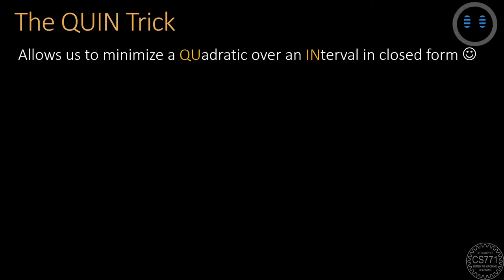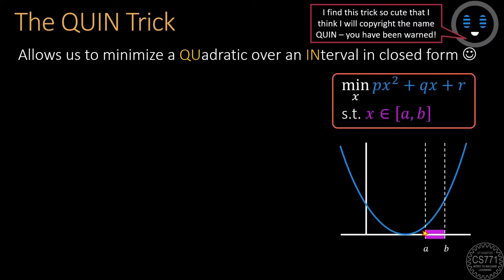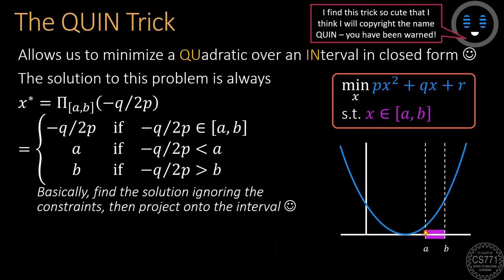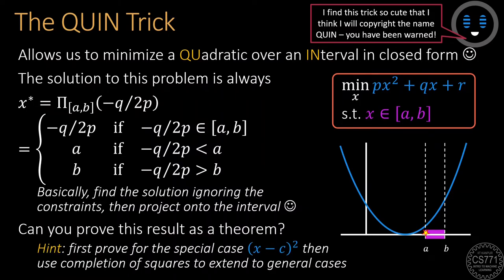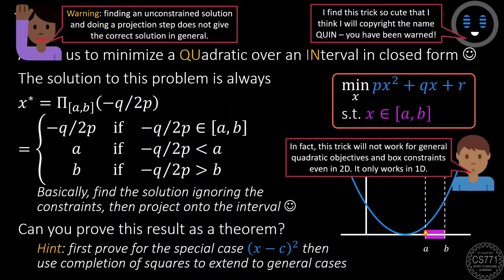Before we look at another example, here is a cool trick called the Quinn trick, which allows us to minimize a quadratic function over an interval. To solve this problem, all we need to do is first minimize the quadratic using first-order optimality by ignoring the constraints, and then project that solution onto the interval. Try proving that this trick indeed works. However, be warned — this trick will not work for general constrained optimization problems, nor for general quadratic problems with box constraints even in two dimensions. It only works in one dimension.